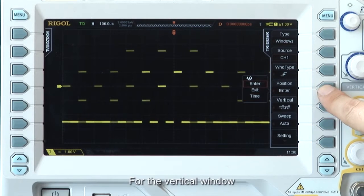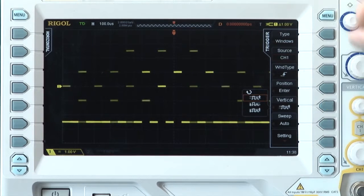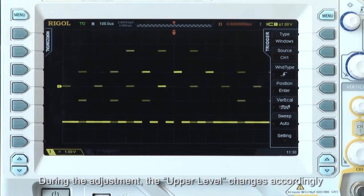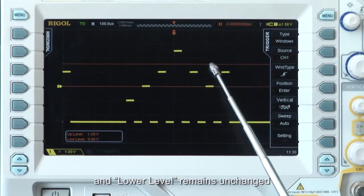For the vertical window, below the top line only adjusts the upper limit of the trigger level. During the adjustment, the upper level changes accordingly, and the lower level remains unchanged.